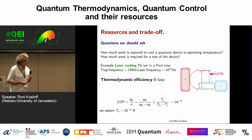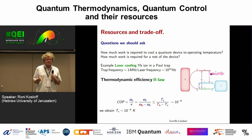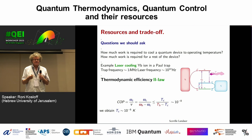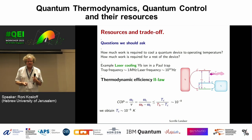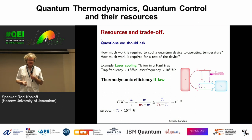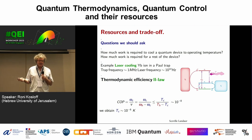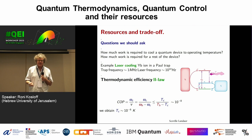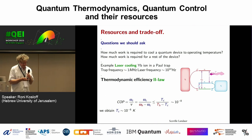This tells us another thing: why is an ion trap quantum computer better than a superconducting qubit? Because we have to cool less — we only have to cool our ions, not the whole device. So energy efficiency immediately answers this question.